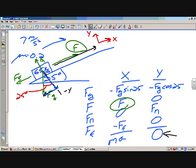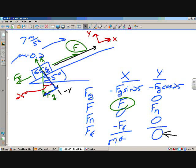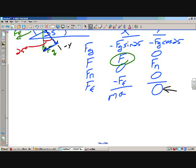So this gravity component plus the normal is equal to zero. Or the normal force is equal to Fg cosine 25.